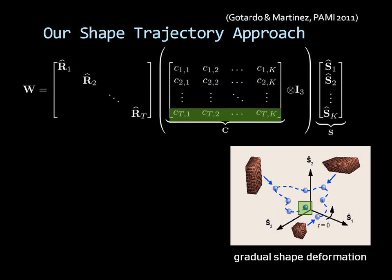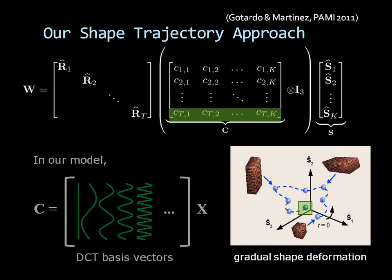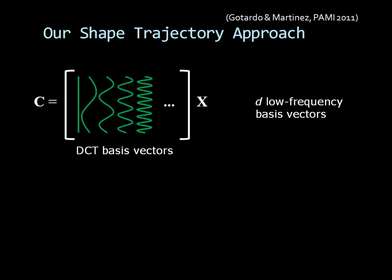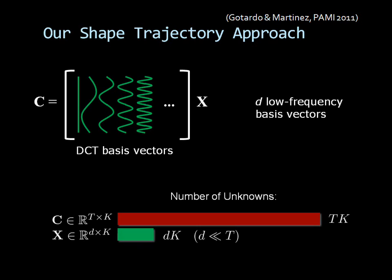This smooth shape trajectory is represented by the coefficients in matrix C. To define a more compact model with fewer unknowns, we represent matrix C in terms of the DCT basis vectors. With gradual shape deformation, a very small number of low frequency DCT vectors is usually enough to model the smooth shape trajectory. As a result, the number of unknowns in our model is greatly reduced.